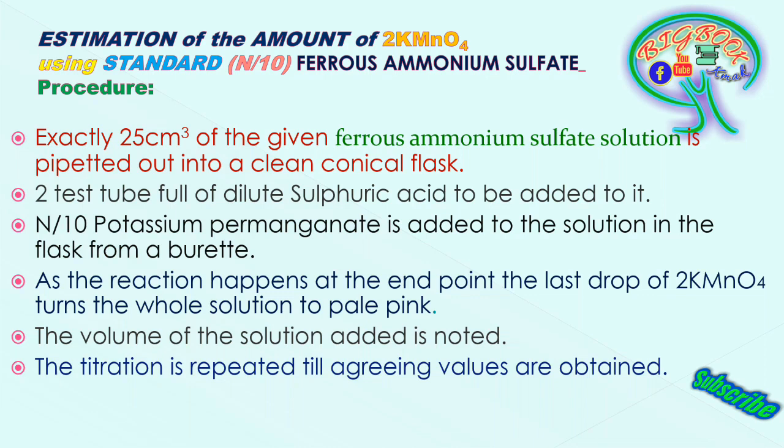Add two test tubes full of dilute sulphuric acid to the conical flask. Depending on the lab, test tube volumes range from around 5 cm³ to 10 cm³, so you can add approximately 2 to 5 mL of sulfuric acid as required.